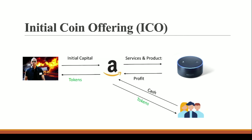Token holders also have rights over major decisions. Since they've invested money and hold tokens, they have voting rights — for example, they can vote on whether Amazon should launch a new product or service. All major decisions go through these token holders as well because of their investment and ownership.